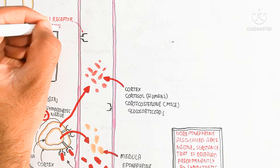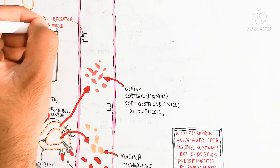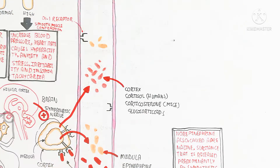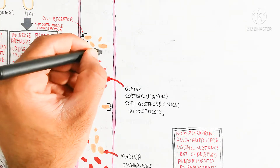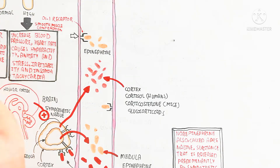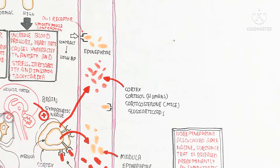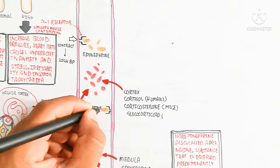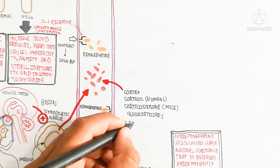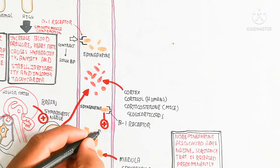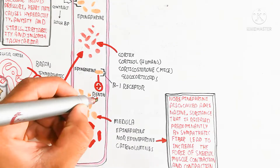Physiological changes include catabolism being enhanced while anabolism is decreased — essentially breaking down the body to produce more energy. The alpha-1 receptor binds with epinephrine to cause contraction of the smooth muscle layers of the vascular system. On the other hand, the beta-1 receptor, when bound with epinephrine, increases renin release, which is important for controlling blood pressure through sodium and potassium balance.